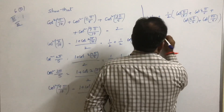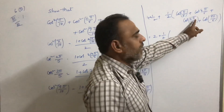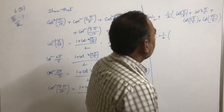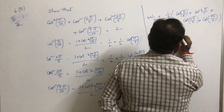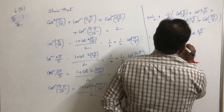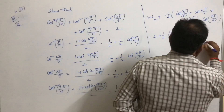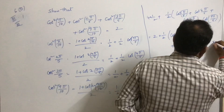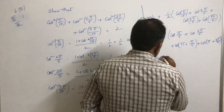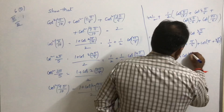This is equal to 2 plus (1/2)[cos(π/5) + cos(4π/5) + cos(6π/5) + cos(9π/5)]. Note that 6π/5 can be written as π + π/5, and 9π/5 can be written as π + 4π/5. So the expression becomes 2 + (1/2)[cos(π/5) + cos(4π/5) + cos(π + π/5) + cos(π + 4π/5)].